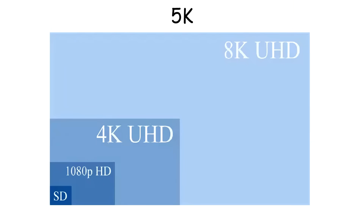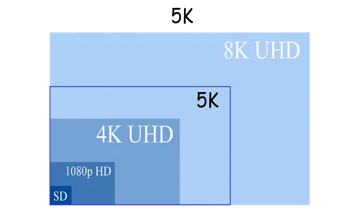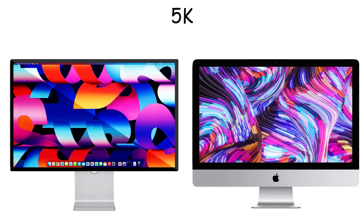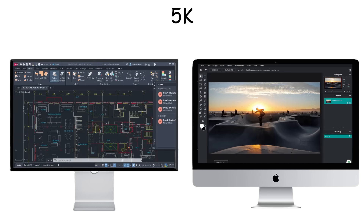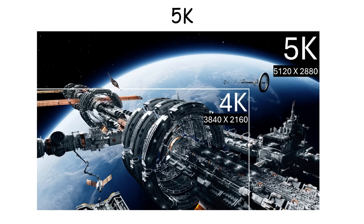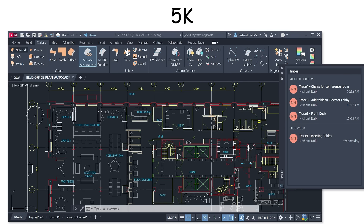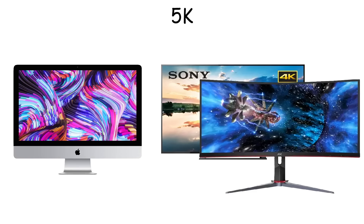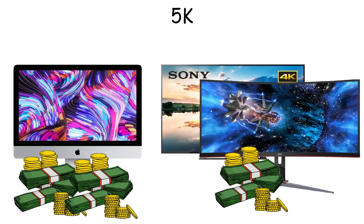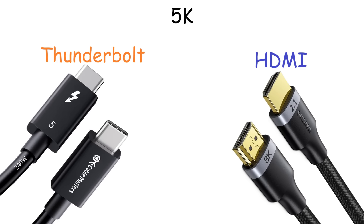5K is a unique resolution that stands apart from regular screen resolutions. It has 5120 by 2880 pixels and is mainly used for professional monitors like Apple's Studio Display and iMac Retina 5K, which are created for designers, engineers, and photographers. What's great about 5K is that you can view 4K images or videos at full quality while still having room for toolbars, panels, and other elements around the screen, so you can see tiny curves or measurements without having to zoom in and out all the time. However, this makes 5K displays more expensive even compared to 4K TVs or monitors, and they also need high-end display cables like HDMI 2.1 or Thunderbolt to run properly.